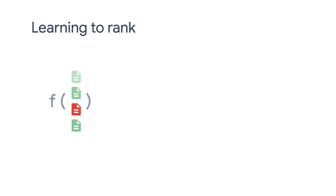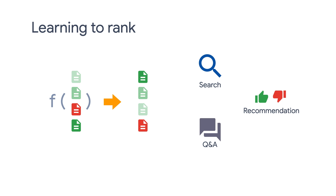At a conceptual level, many applications can be formulated as a ranking problem. For example, when you search 'machine learning' on a search engine, you can think of it as ranking many candidate results and returning the most relevant ones to you in an ordered list. This is similar in the case of recommendation systems and Q&A systems as well.